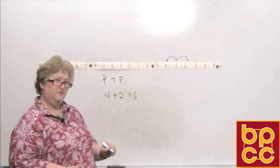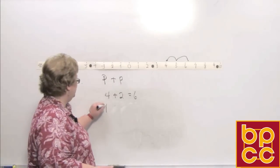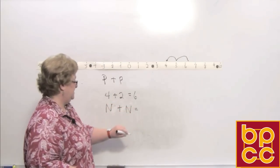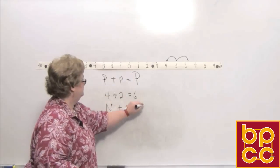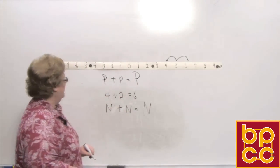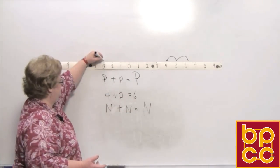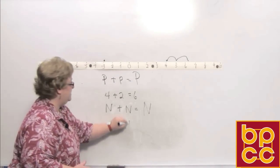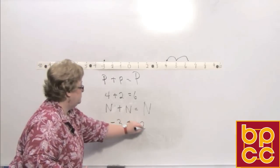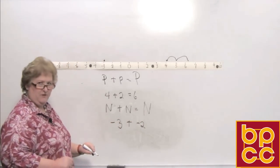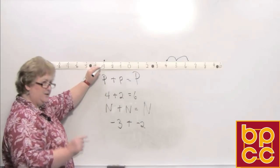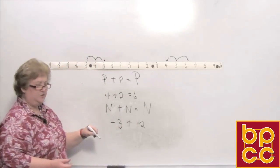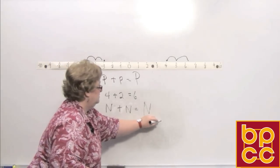Let's try a negative and a negative. We have a negative number and we're going to add to it another negative and find out what we'll get. I'll go to negative 3, and that says go to negative 3 and add to it two more in the negative direction. So I'm at negative 3, adding two more in the negative direction — my answer is negative 5.